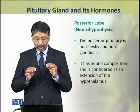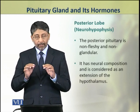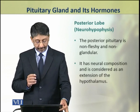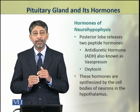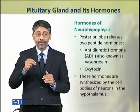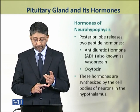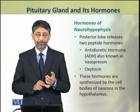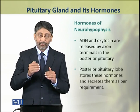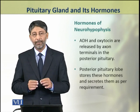The posterior lobe or neurohypophysis of the pituitary is non-fleshy and non-glandular. It has neural composition and is considered an extension of the hypothalamus. It does not synthesize any hormone but releases two hormones synthesized by the hypothalamus: antidiuretic hormone ADH, also known as vasopressin, and oxytocin. These are released by axon terminals in the posterior pituitary, which stores and secretes them as per requirement.